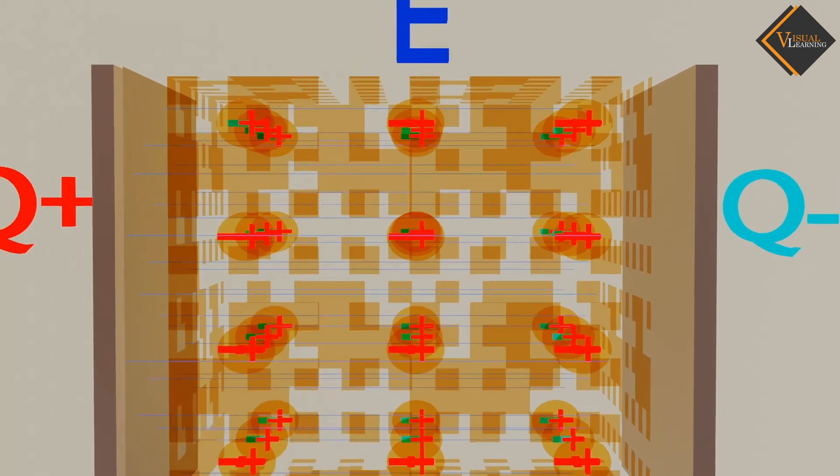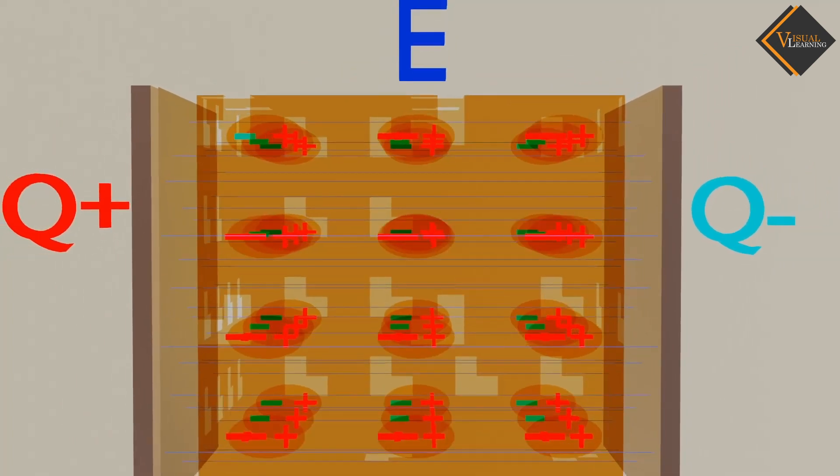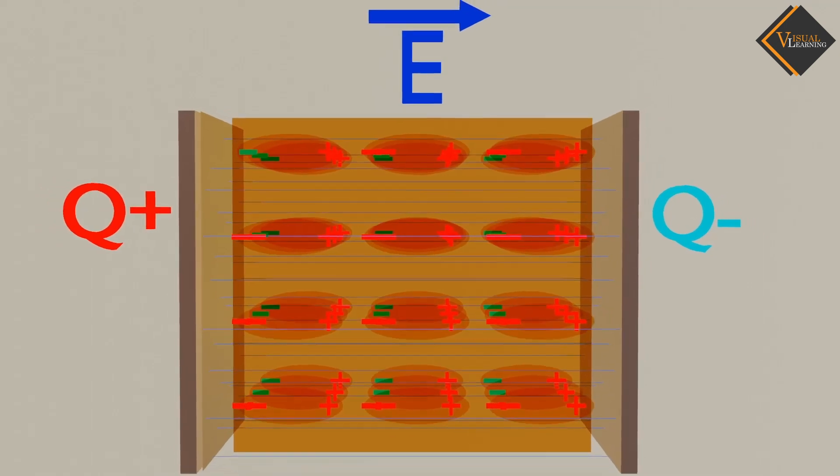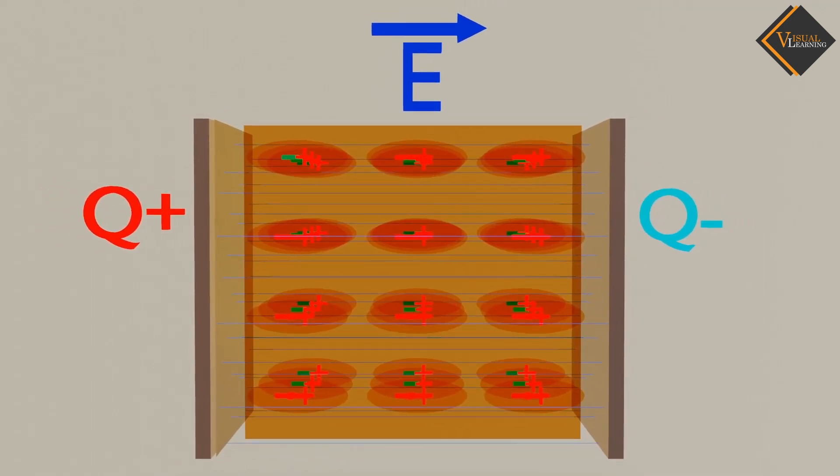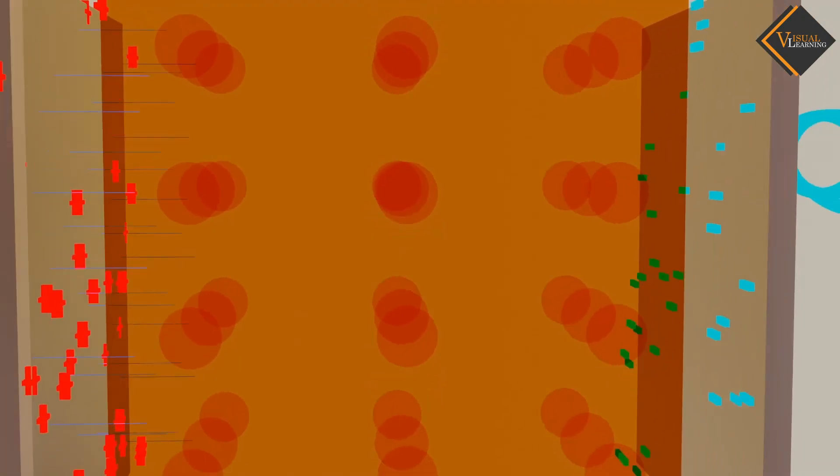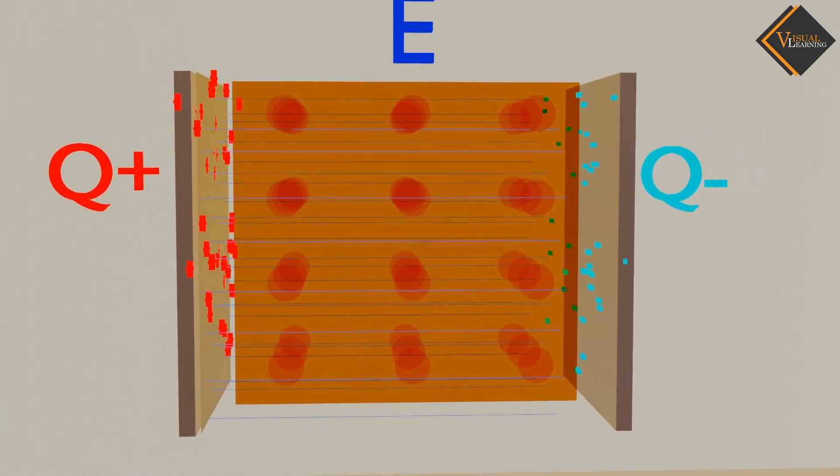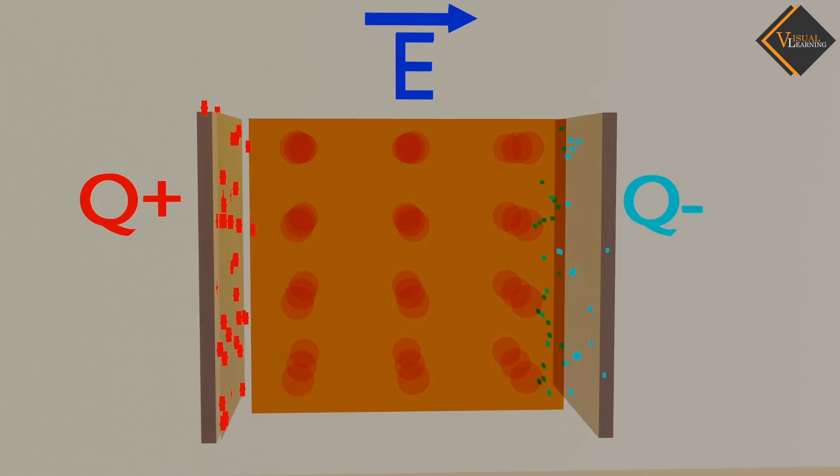If we reduce the strength of the electric field to zero, these molecules return to their normal state. In simple terms, the dielectric property allows molecules to respond to the electric field, creating their own electric field in the opposite direction, and they return to their normal state when the external electric field is removed.